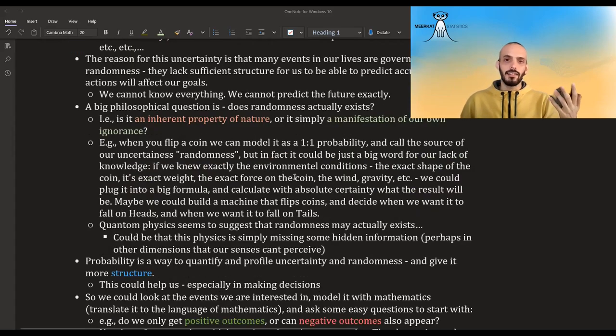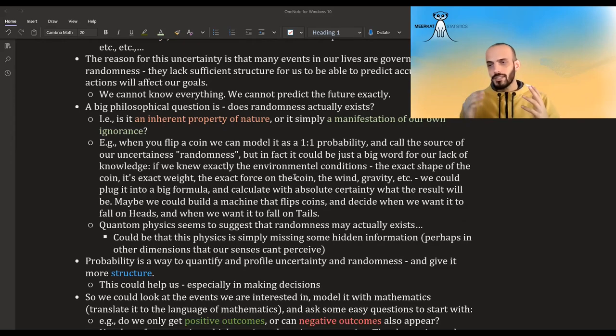So a nice thought experiment is to think about flipping a coin, right? So assuming that the coin is fair and it has a 50-50% probability of falling heads or tails, we usually think of it as a random event, right? We will flip a coin and it's with random probability will either be heads or tails. But maybe this word we use, randomness, is just a big word to cover up our ignorance, right? So if we knew everything perfectly, if we knew the exact shape of the coin to a microscopic level, if we knew the exact weight of the coin,